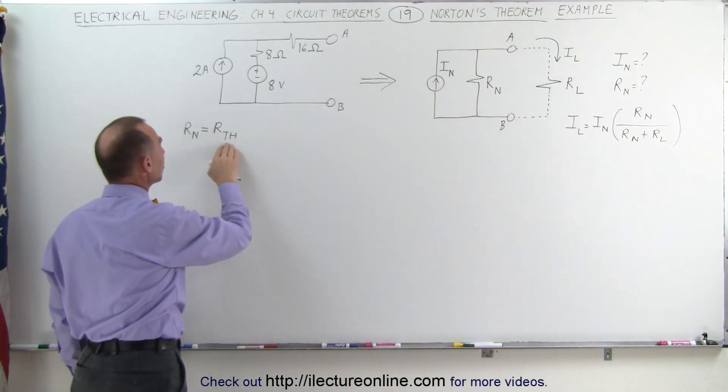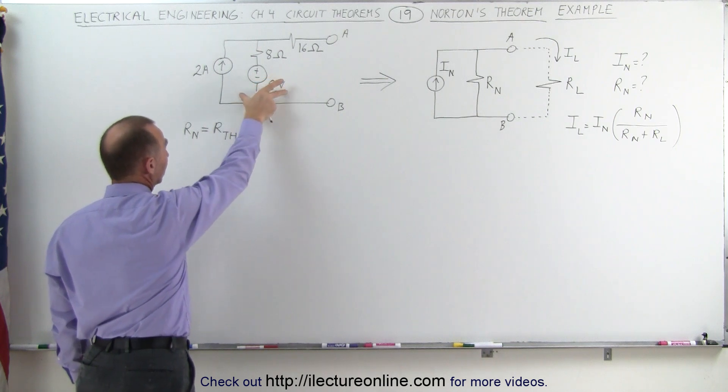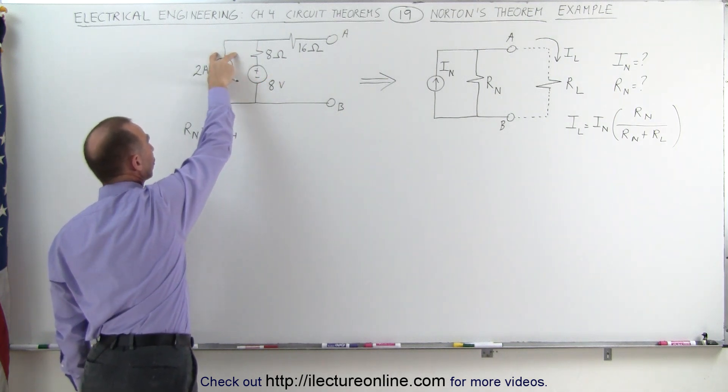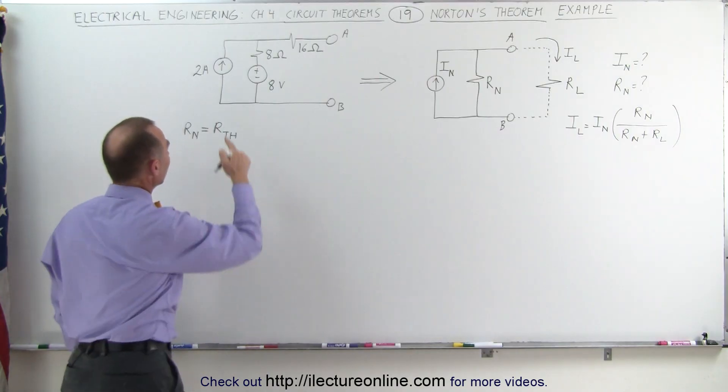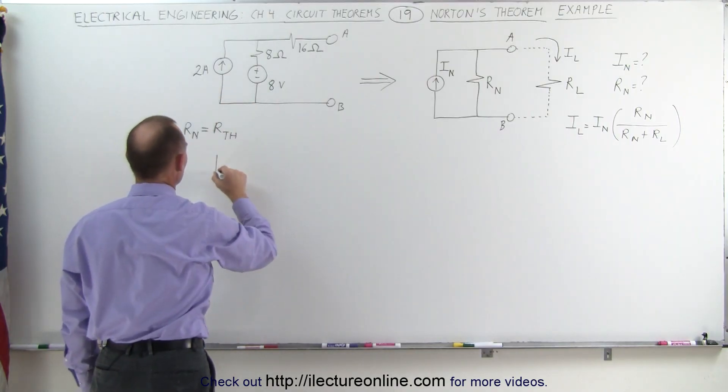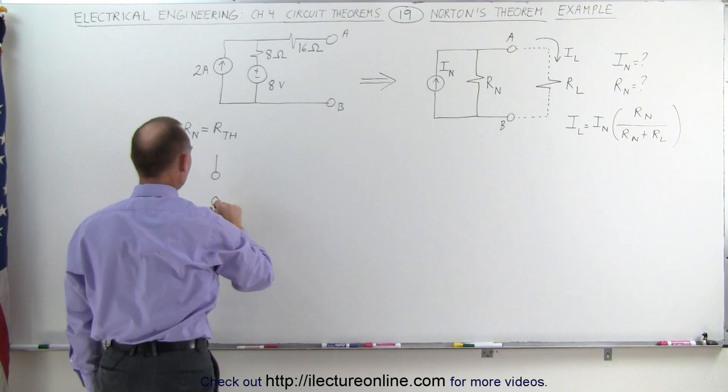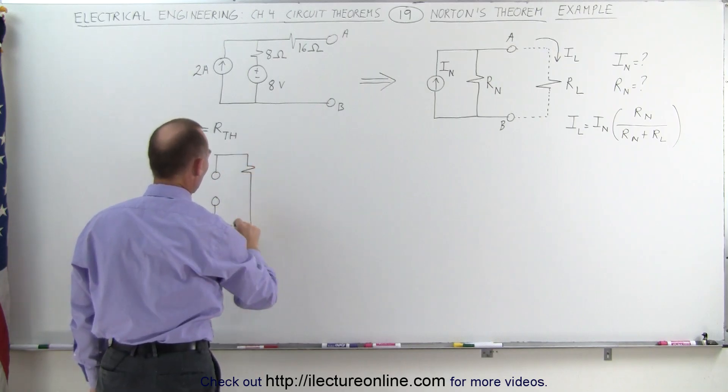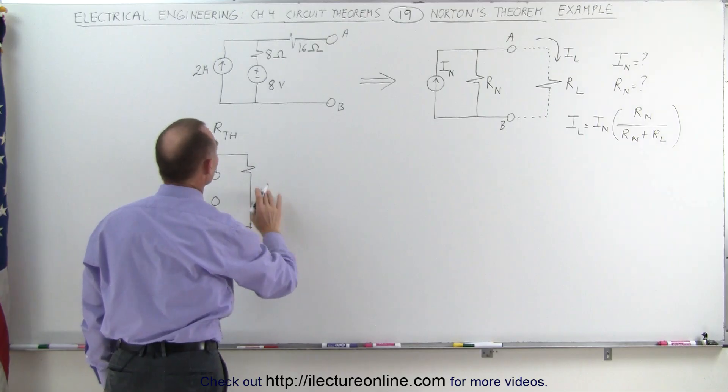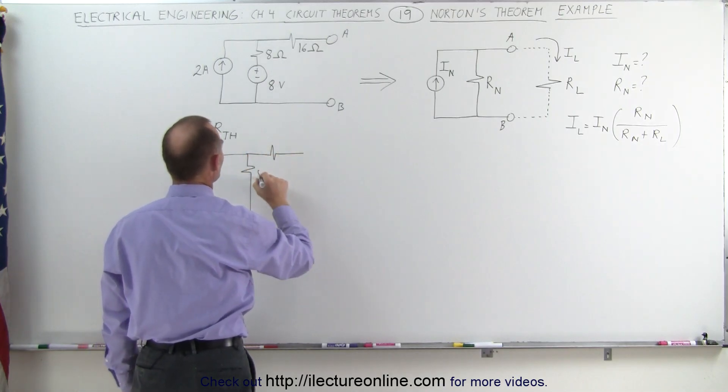To find the Thevenin resistance or the Norton resistance we take the circuit here, we remove any current sources and we drop the voltage across the voltage source to zero. That means we get the following circuit. We'll have an open right here where the current source normally goes, the 8 ohm resistance,